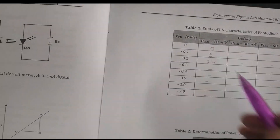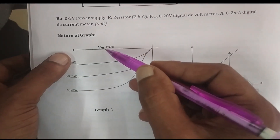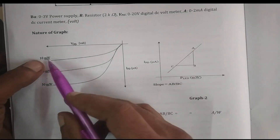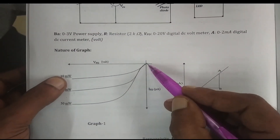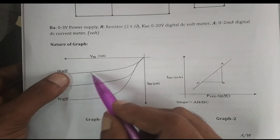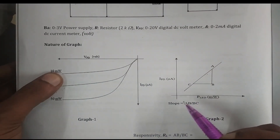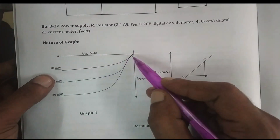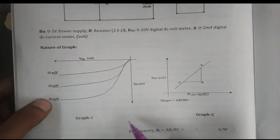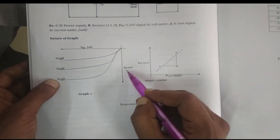After getting all these readings, plot the graph of V_PD versus I_PD by taking the negative x-axis for the reverse potential V_PD and the negative y-axis for the reverse current I_PD. For 10 milliwatts, as voltage increases, the current gradually increases initially, then at higher voltage it almost remains constant. That constant value is called the reverse saturation current. Plot the same graph for 30 milliwatts and 50 milliwatts.